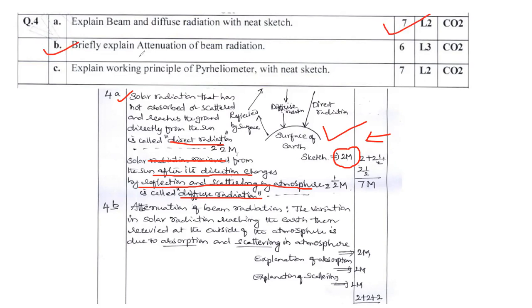Better you can explain with the help of this diagram also. Total weightage you will be getting 7 marks. Question number 4b: Briefly explain the attenuation of beam radiation. Here as you can see the definition attenuation of beam radiation is given here. The variation in the solar radiation reaching the earth received at the outside of the atmosphere is due to absorption and the scattering of the atmosphere. Then give a brief explanation about absorption and also give an account on scattering. Total weightage is 2 plus 2 plus 2, you will be getting 6 marks.